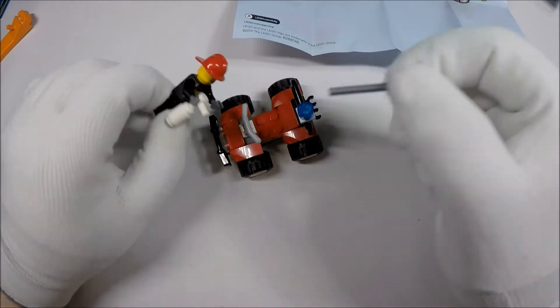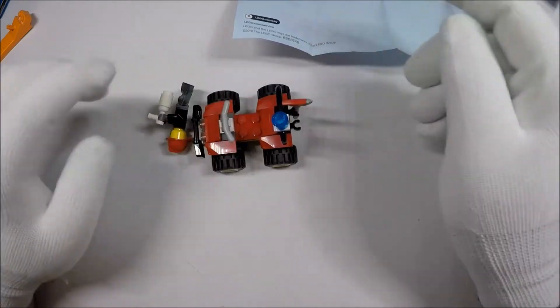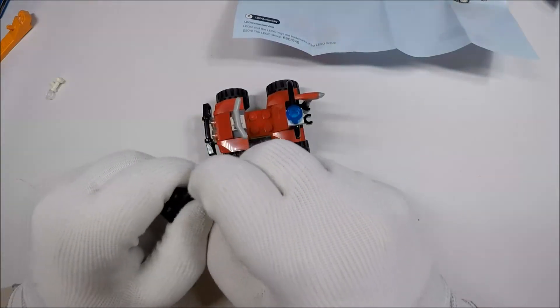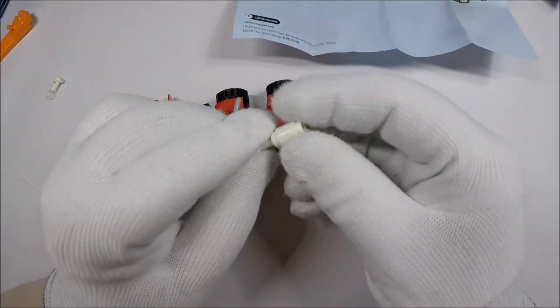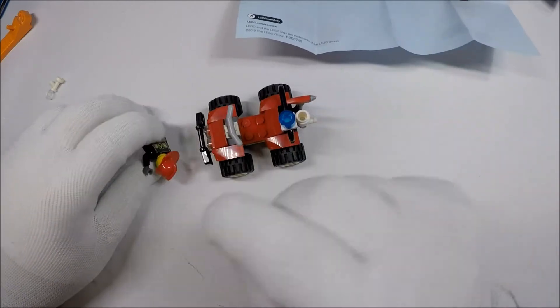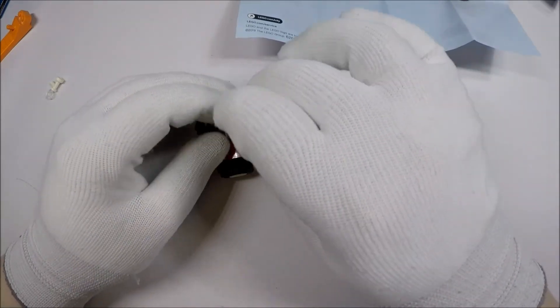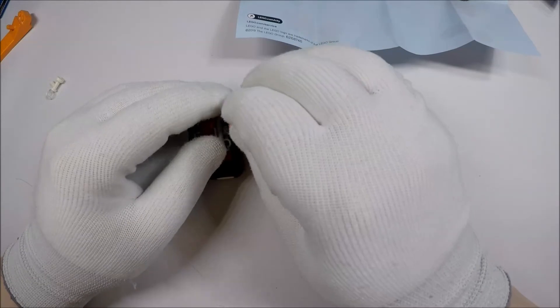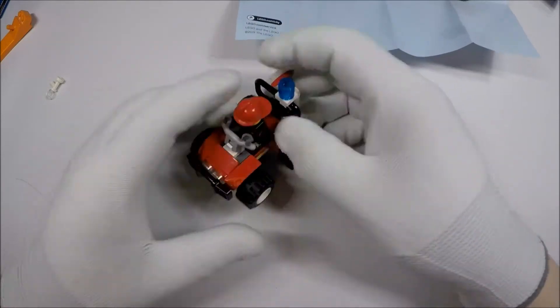So if we want to put these here, we just clip them like so. And they clip this upside down according to the instructions. So I'll clip it the same way. And then the dude gets in and he can drive around his fire ATV. Like so.